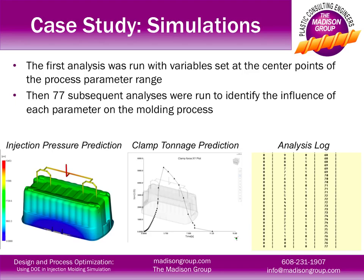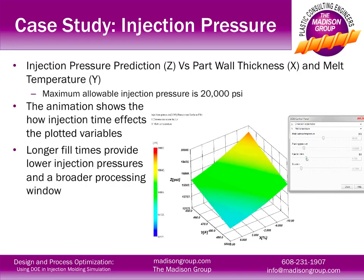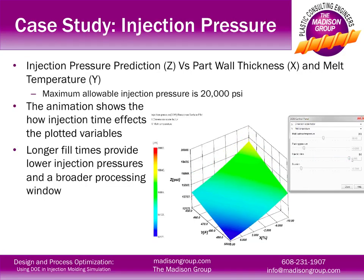The DOE analysis set up and ran 77 different analyses based on the parameters specified. Obviously, setting up these analyses manually would have taken a significant amount of time, and that's where the power of DOE really comes in. Here we're showing injection pressure results as a function of part thickness and melt temperature.